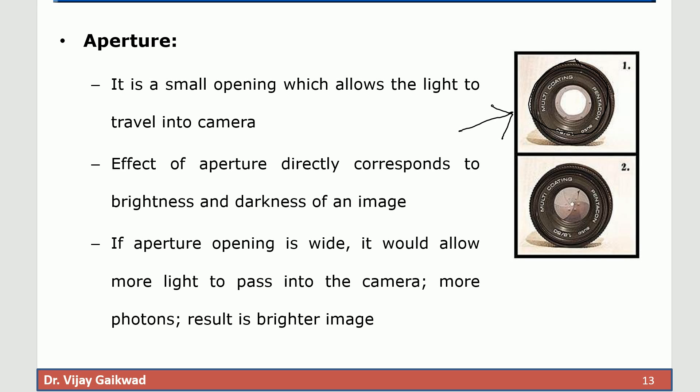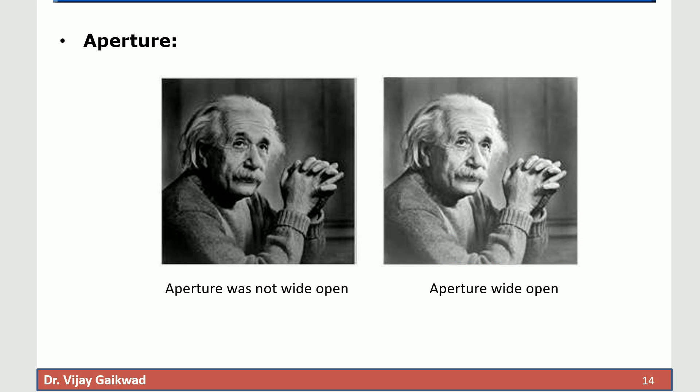On the other hand, if the aperture is small it would not allow light to pass into the camera and that will result in less number of photons. The opening of aperture is very small and therefore the resultant image is not having the brightness as compared to image number one. As you can see in this image the effects of aperture. If aperture was not wide open then this image will be more inclined towards a dark intensity. On the other side if aperture is wide open then this image would be brighter.